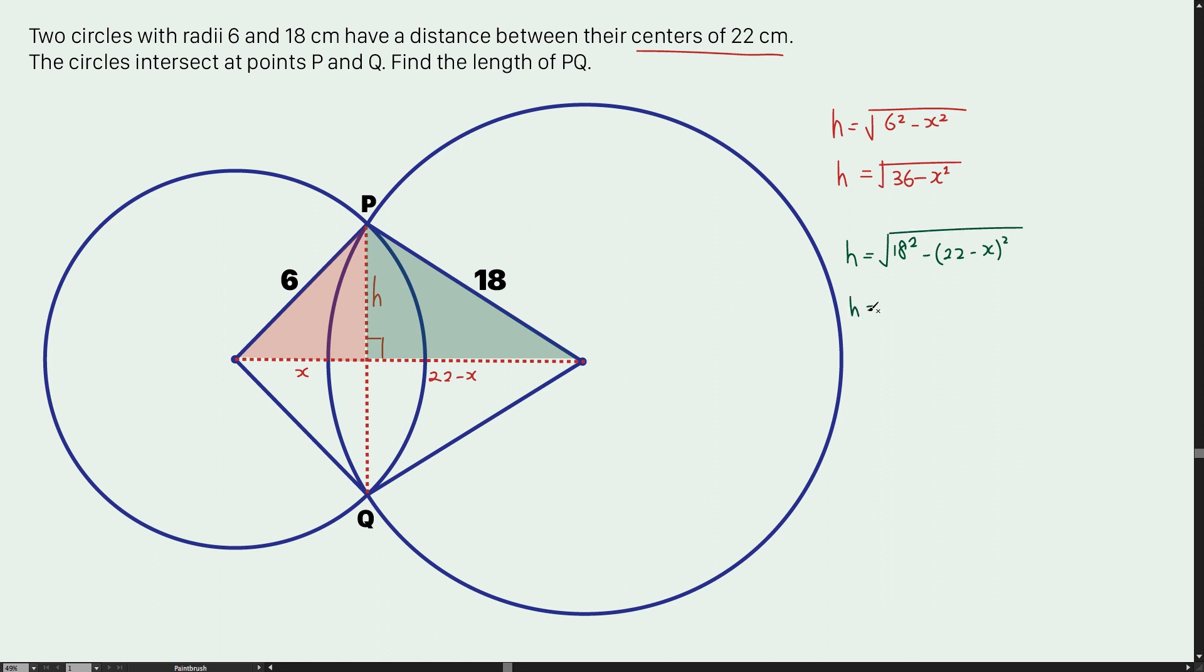Now, let's expand this. That turns to 324 minus (484 minus 44x plus x squared), and square root of the whole thing. Now I'm going to simplify this equation. That turns to negative x squared plus 44x minus 160, and square root of the whole thing.